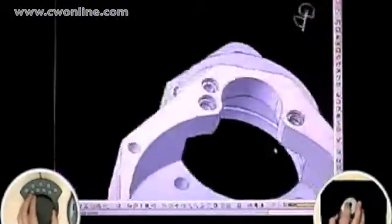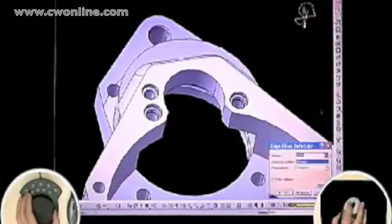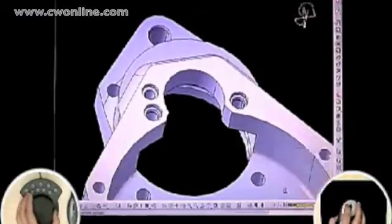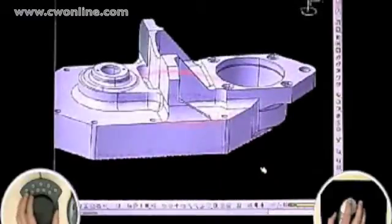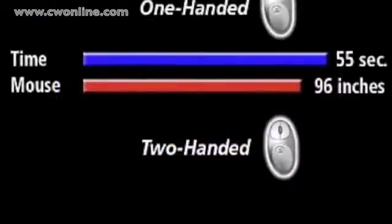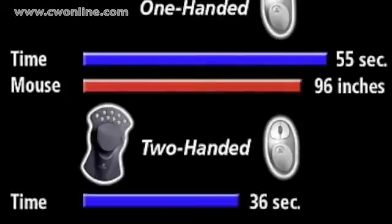By sharing the workload between both hands, designing in CATIA becomes easier and more balanced. When using a motion controller in conjunction with the mouse, this task was accomplished in 36 seconds and required only 35 inches of mouse cursor movement. This two-handed approach achieves a significant time saving and over 50% reduction in repetitive mouse movement.